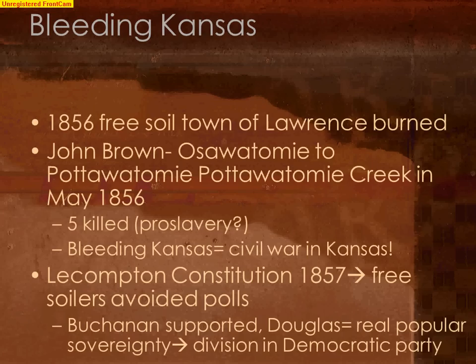This was a sneaky trick on the part of the pro-slavery advocates. The free soilers, seeing it as a trick, avoided the polls altogether. And so, overwhelmingly, the people going to the polls were pro-slavery, and they voted for the Lecompton Constitution that would allow complete and total slavery in the state of Kansas.